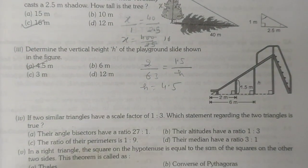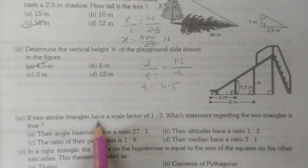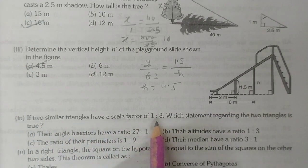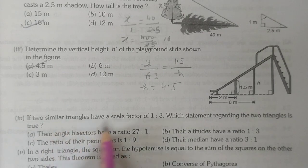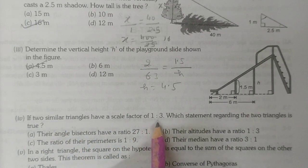If two similar triangles have a scale factor 1 is to 3, meaning two triangles are similar and their sides ratio is 1 to 3, which statement regarding the two triangles is true?